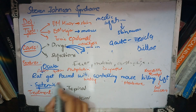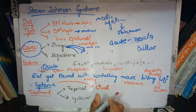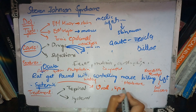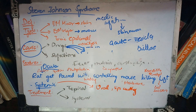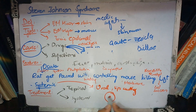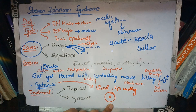Mucous membrane involvement, particularly oral mucosa, is also seen. Patients develop vesicles and crusting on the lips. On the body, characteristic target lesions appear — these are circular lesions with a center, resembling a target or bullseye. Both oral mucous membranes and skin body lesions with target appearances are typical findings.